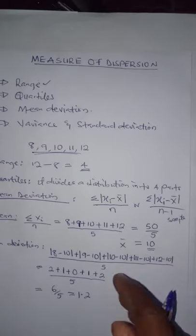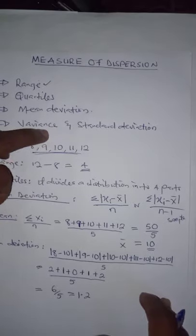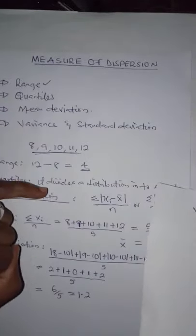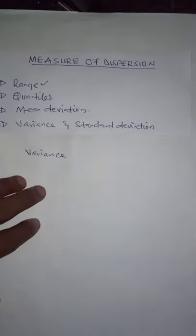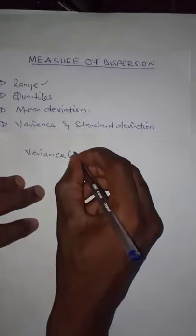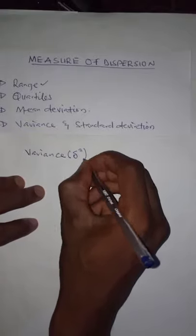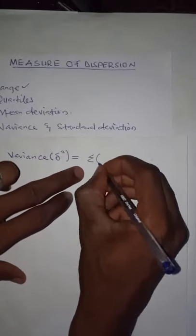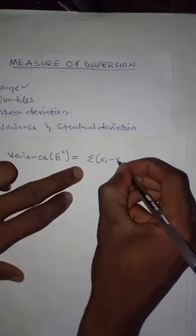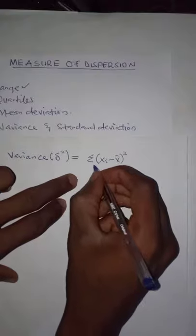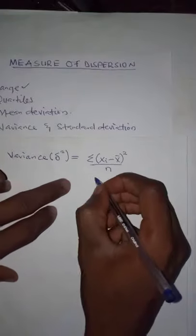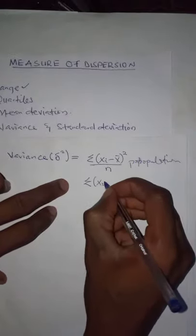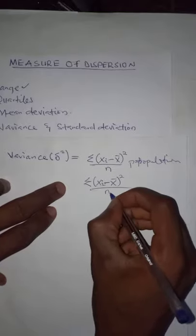Now let us look at variance and standard deviation. There is no way you can find standard deviation without first finding variance. Variance, denoted as sigma squared, is equal to the summation of (x minus X-bar) squared, all over n for a population. For sample variance it is (x minus X-bar) squared over n minus 1.